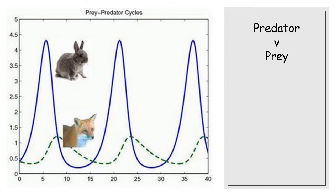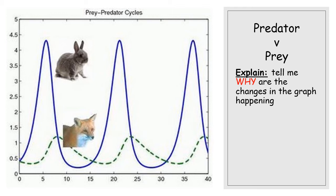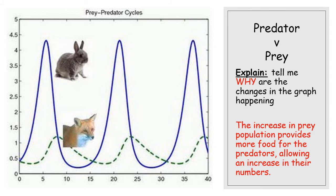You might also be asked to explain the graph — that's a slightly different question asking why the changes are happening. The increase in prey population provides more food for predators, allowing them to increase in numbers. When predator numbers increase, more prey are being eaten, so prey numbers decrease. As prey numbers decrease, there's less food for predators, so fewer predators survive — a constant cycle. You should now understand predator and prey, but also the difference between 'describe the graph' (what is happening) and 'explain the graph' (why it is happening).